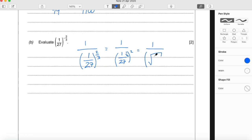So 1/27, yeah, it's cube rooted. So 1/27 cube rooted.